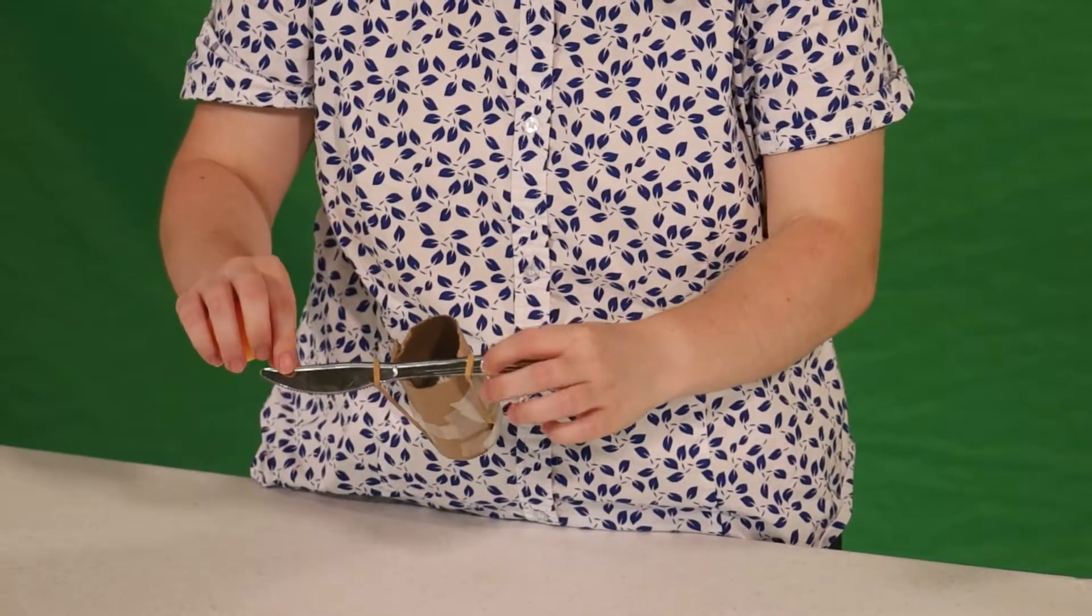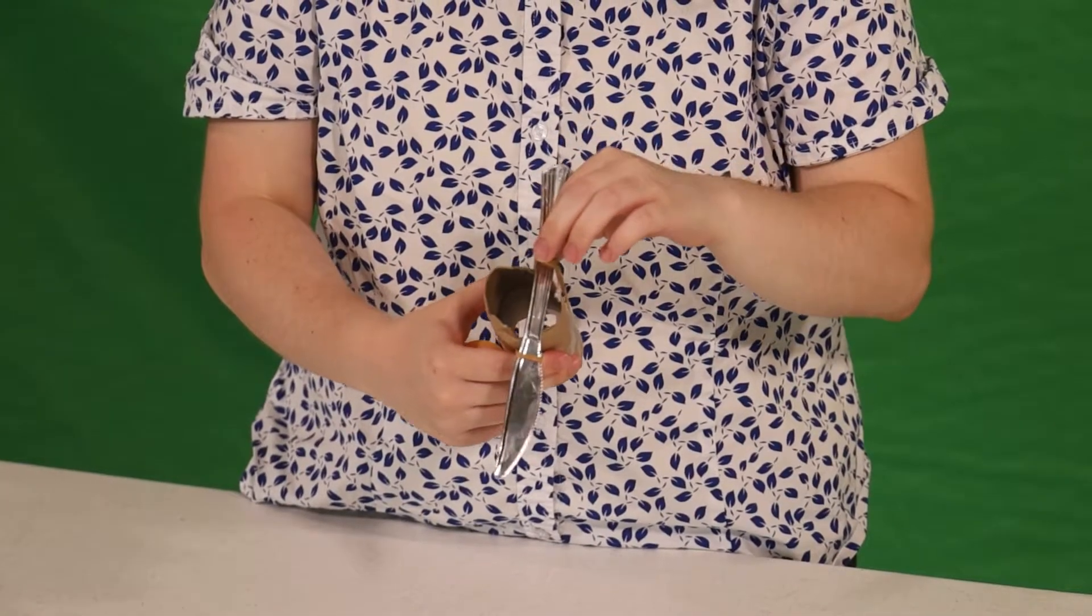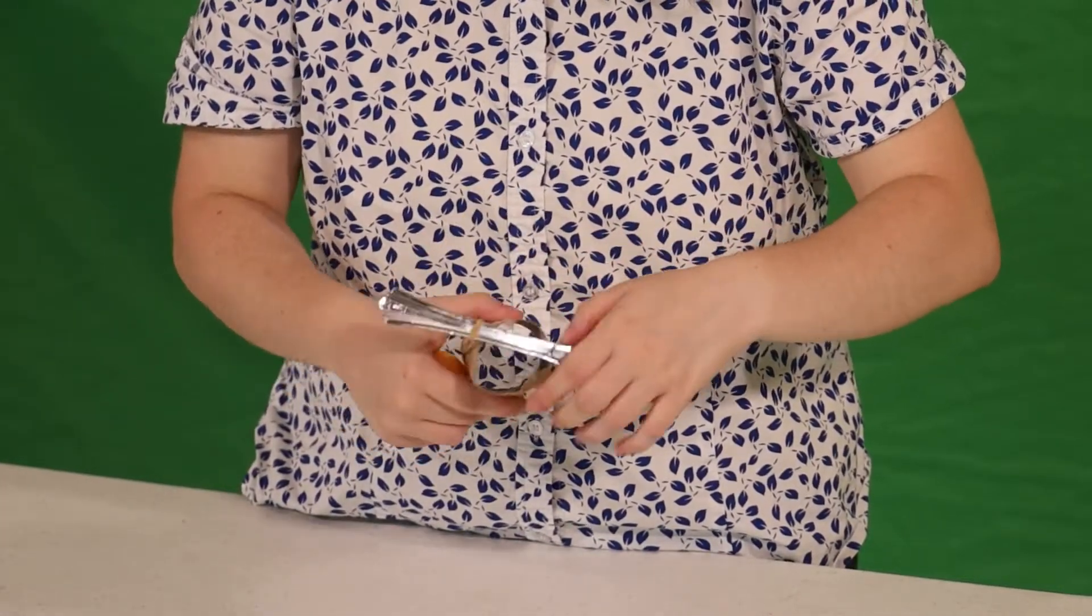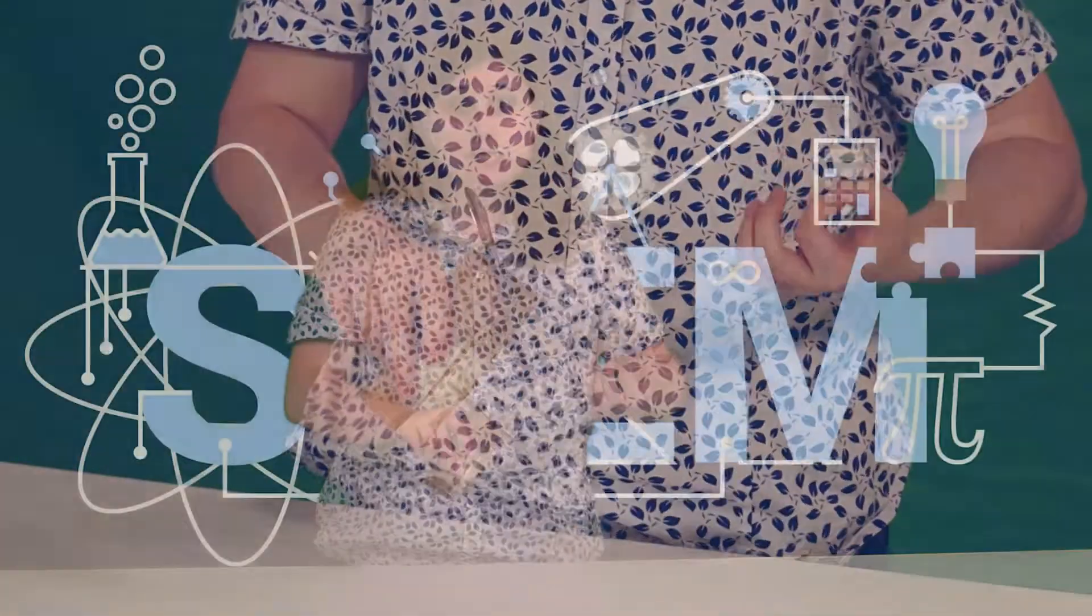Then you're going to take your pencil or knife or anything else that you're using and stick it between the two rubber bands. That way when you pull it like this, it will act as the slingshot.